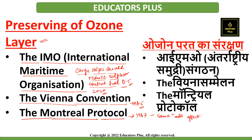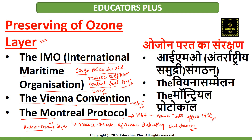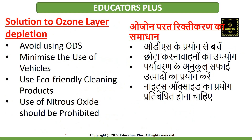The Montreal Protocol was signed in 1987 and entered into force in January 1989. This Protocol provides provisions so that we can reduce the production and consumption of ozone depleting substances in order to protect the ozone layer. Apart from these international initiatives, there should also be solutions for ozone layer depletion at the individual level.